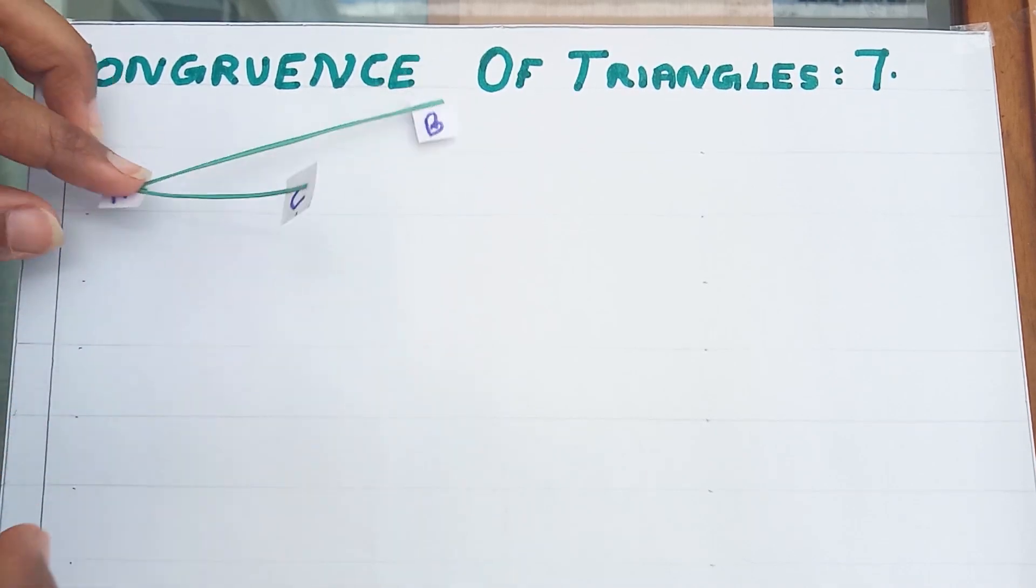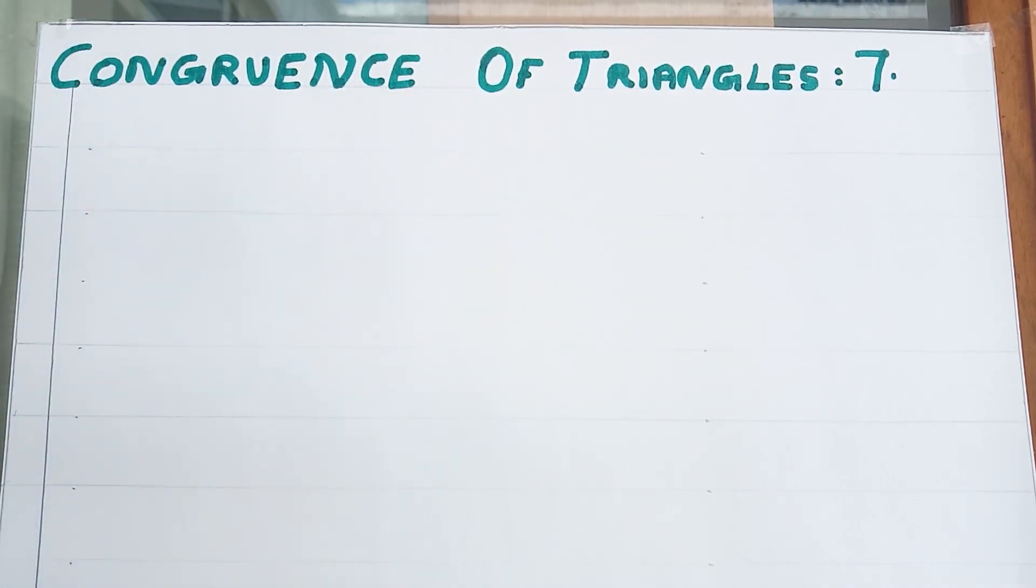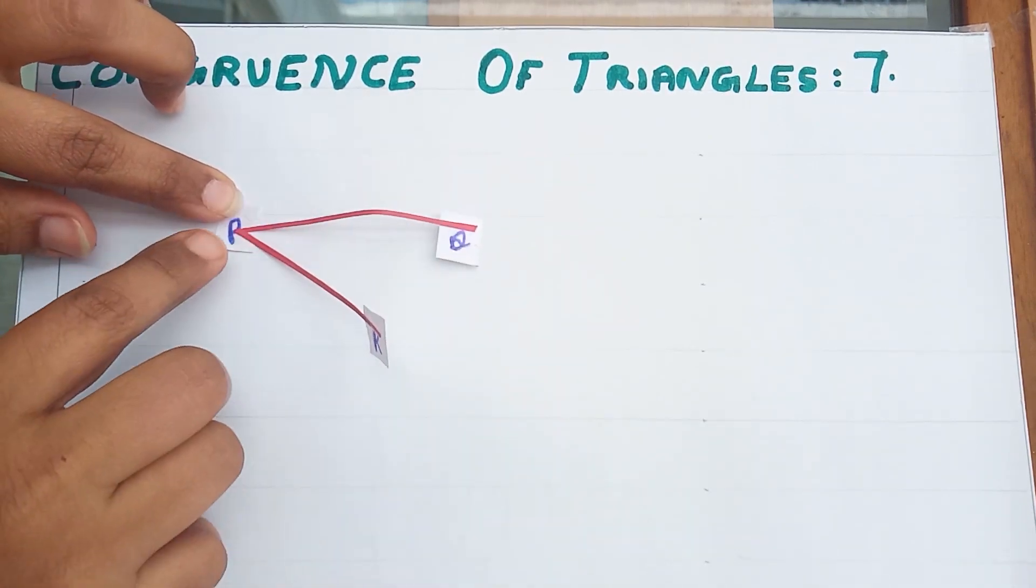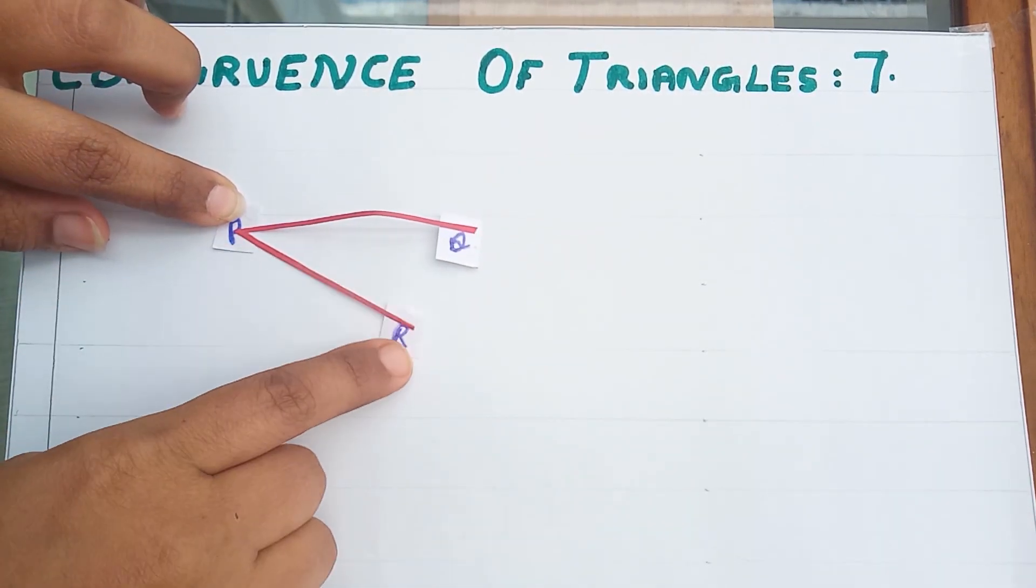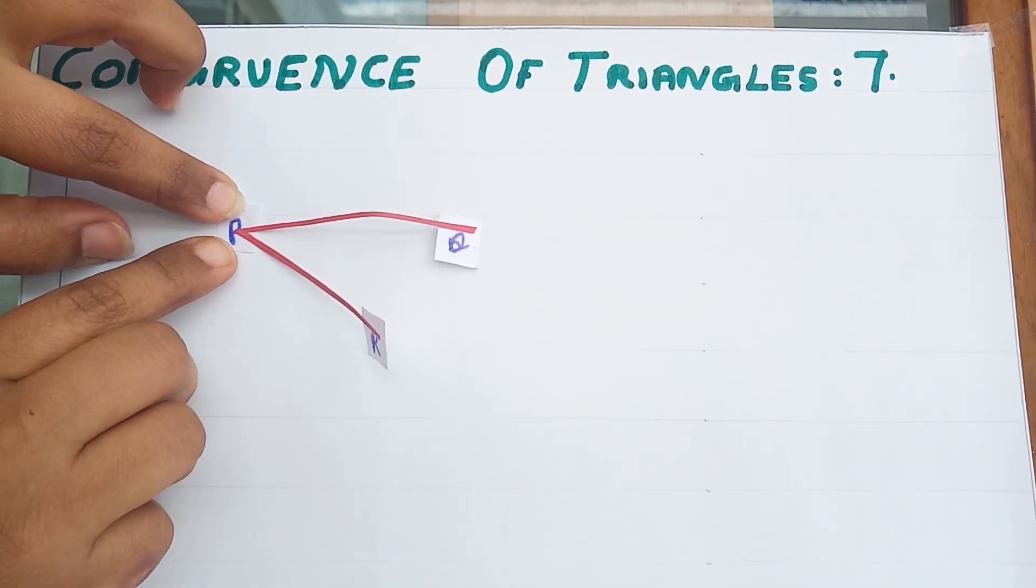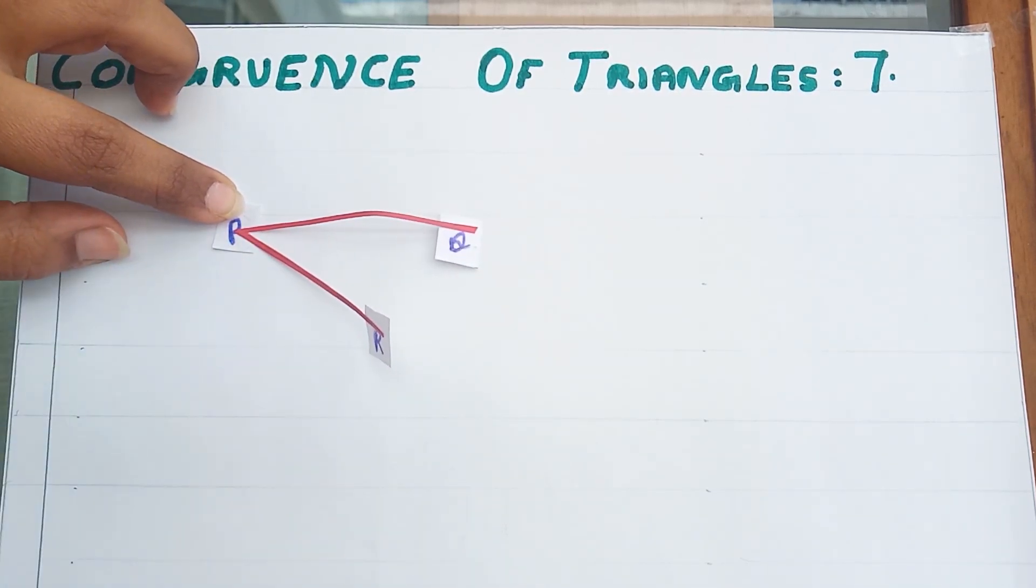One more angle I have brought. Angle QPR. PR and PQ are the arms of this angle and point P is the vertex of this angle.